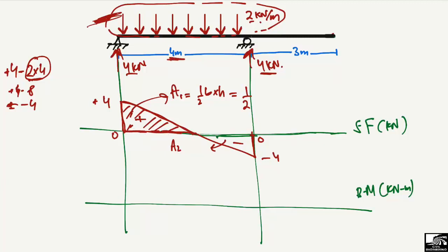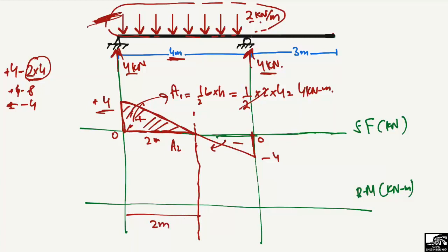For the first triangle A1, the base is 2 meters and the height is 4 kN. So the area equals half × 2 × 4 = 4 kN·m. This means the bending moment at the center of the simply supported portion is 4 kN·m.